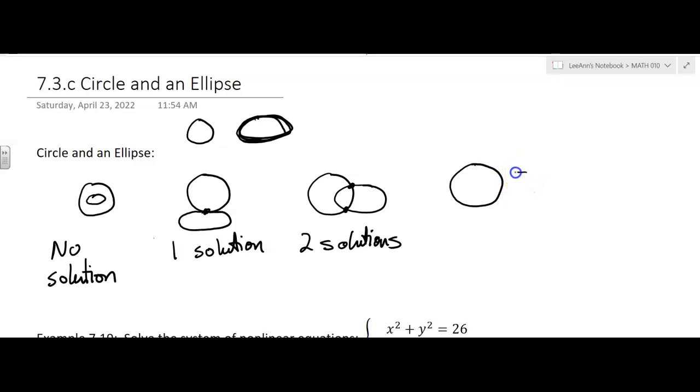And the ellipse could go something like that, where it's tangent right here and then it intersects in two other points. And in that case, there are three solutions.